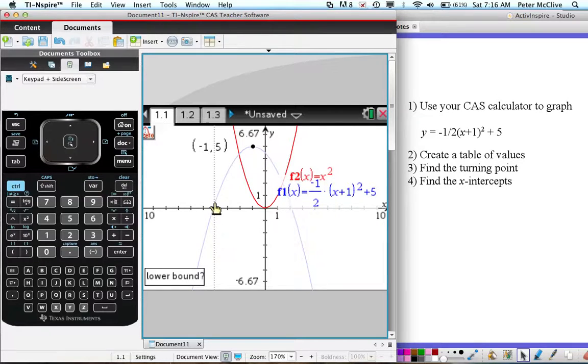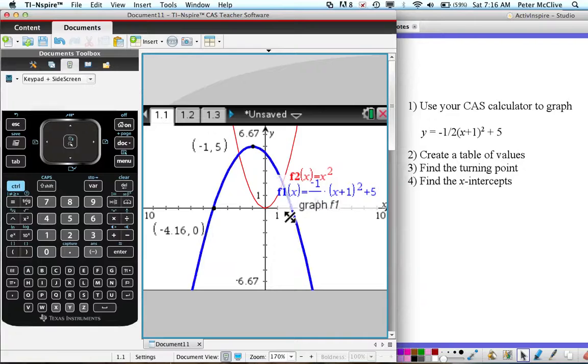What's the lower bound? So I'm interested in this intercept here, so I'm going to click just to the left of it and keep moving to the upper bound, and it's giving me the value. Just move that to one side so it's not in the way, so x minus 4.16, y equals 0.